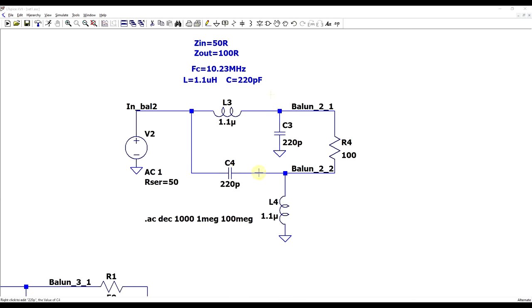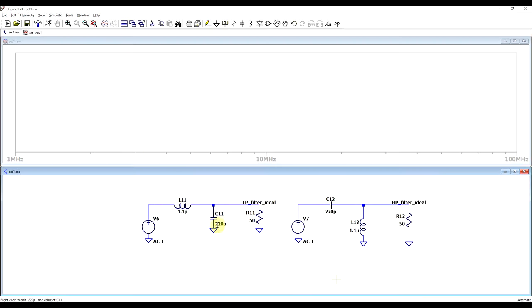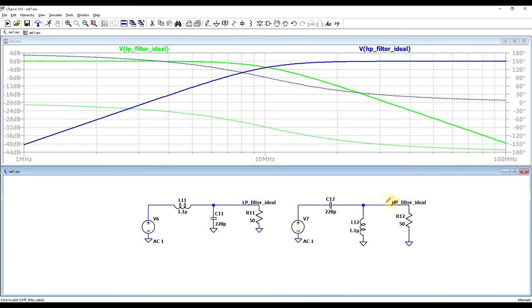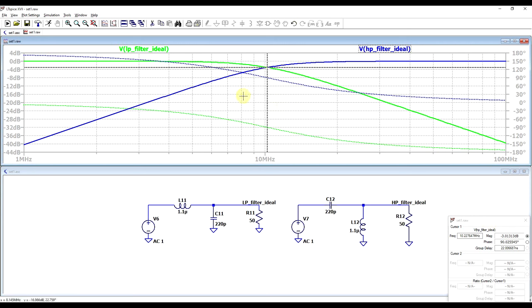So first off, I calculated some component values that can be used for a balun that connects a 50 ohm unbalanced signal source to a 100 ohm balanced load. And we can start by looking at the two halves in isolation. So if we stimulate the circuits with an ideal signal source, so one that has no internal resistance, and we look at the outputs, we can clearly see that at around 10.2 megahertz, we have the exact same amplitude on both signals, and the phase shift is about plus and minus 90 degrees. So there is exactly 180 degrees of phase shift in between the two signals.